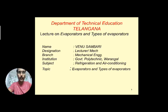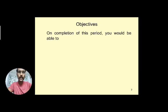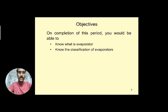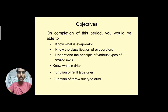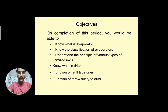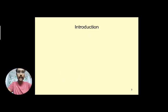Looking at the diagram we can go further. Today's objectives: after completion of this period you will understand what an evaporator is, its function, and the list of classifications of evaporators. We will also see each main type of evaporator used, and additionally we will see the dryer — its types, where it is used, and its function.